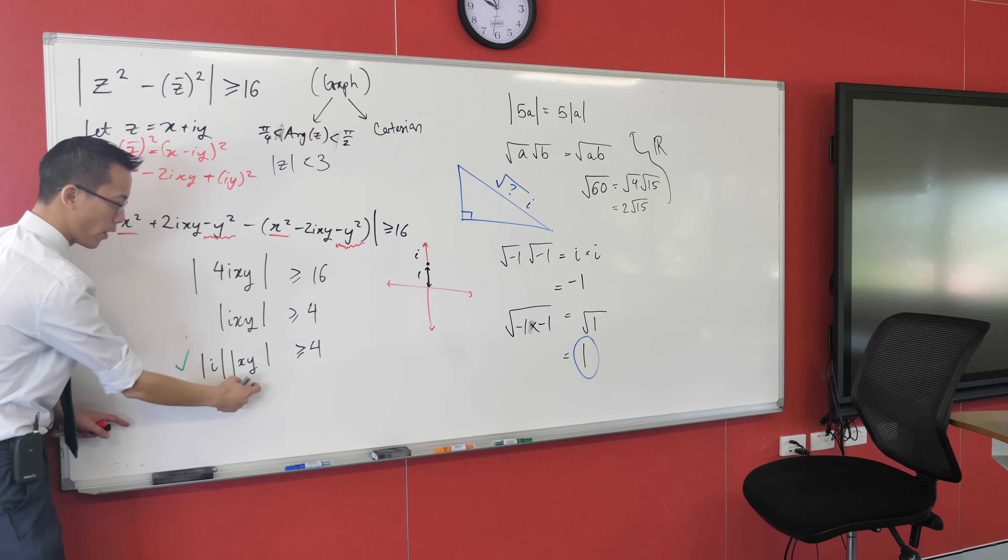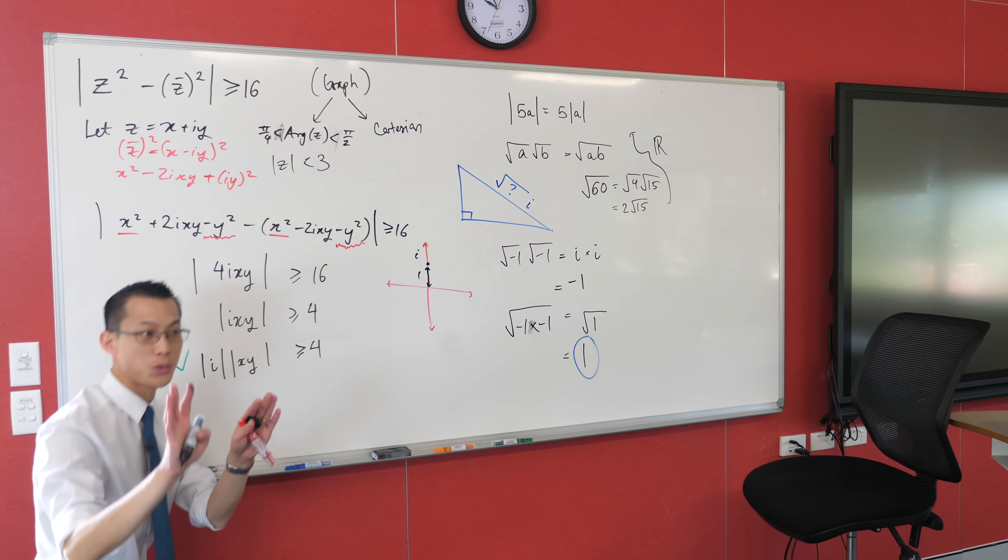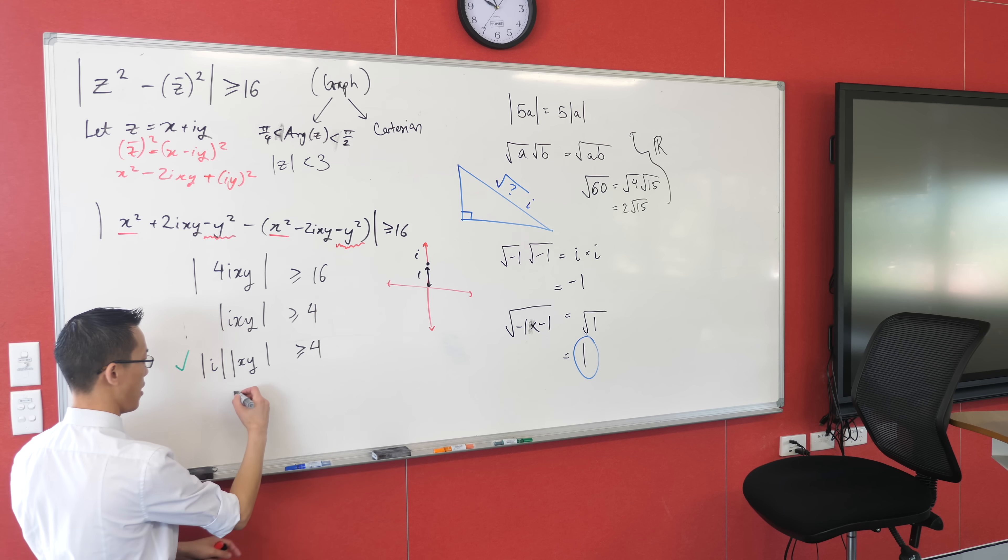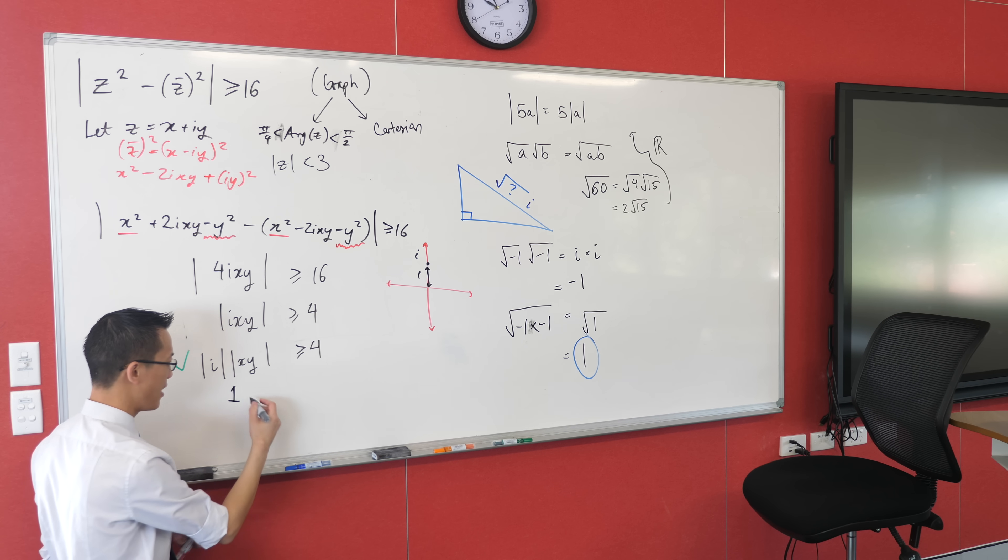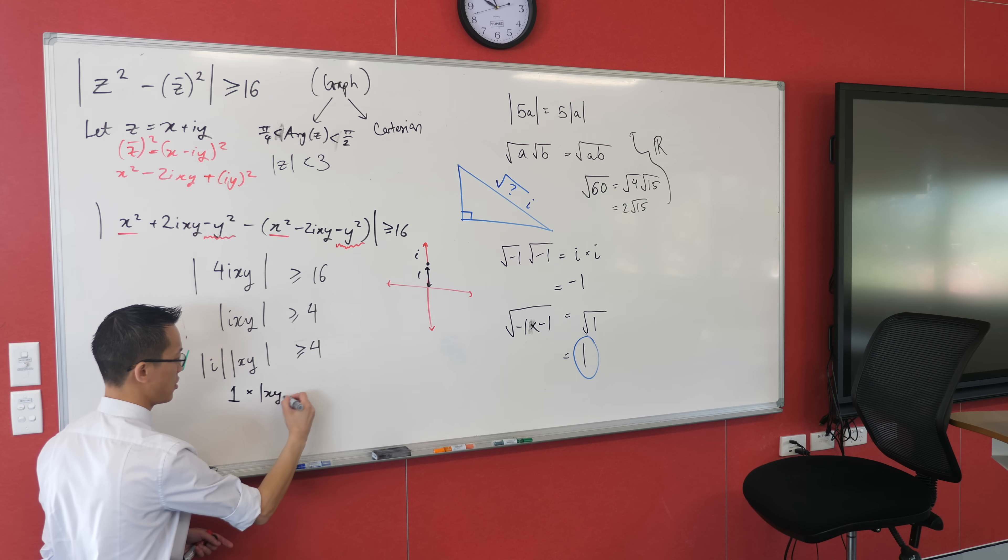Now, just a little minor thing here, when you go from this to the next line, I'm going to ask you if you ever see something like this, to write what this actually equals. Don't just make it disappear, it actually is something. It just so happens that that something is one, okay?